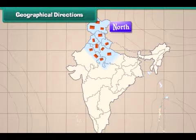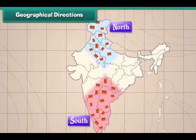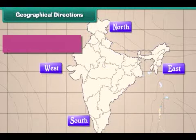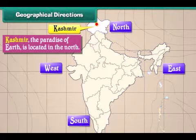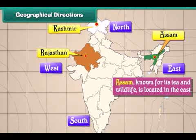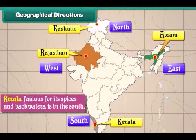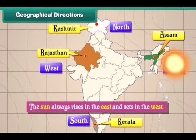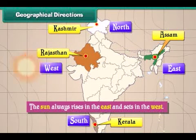People live at different places in India. Some places are in the north while some others are in the south. Some places are located in the east and some others in the west. Kashmir, the paradise of earth, is located in the north. Rajasthan, the land of desert, is located in the west. Assam, known for its tea and wildlife, is located in the east. Kerala, famous for its spices and backwaters, is in the south. The Sun always rises in the east and sets in the west.